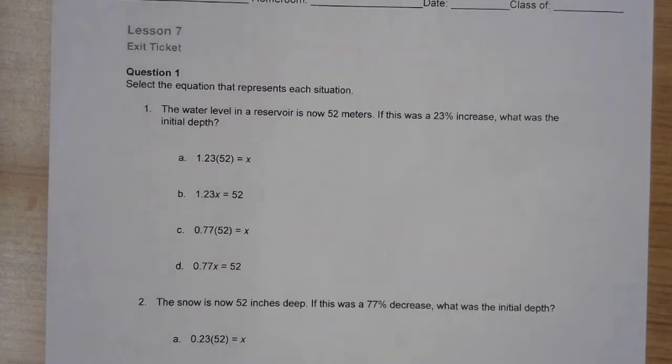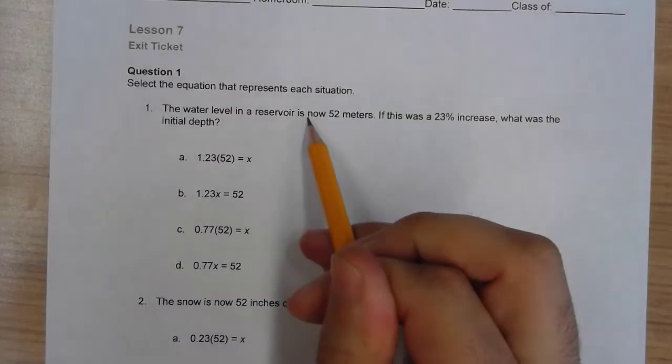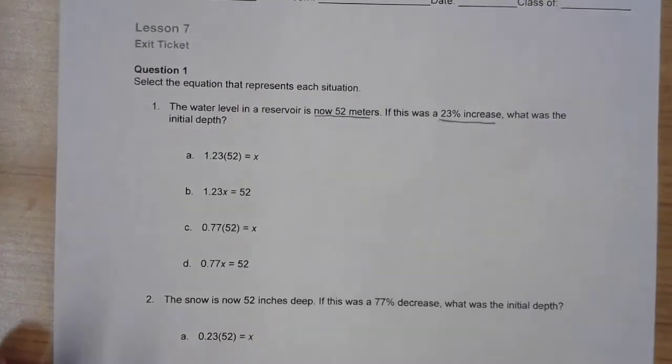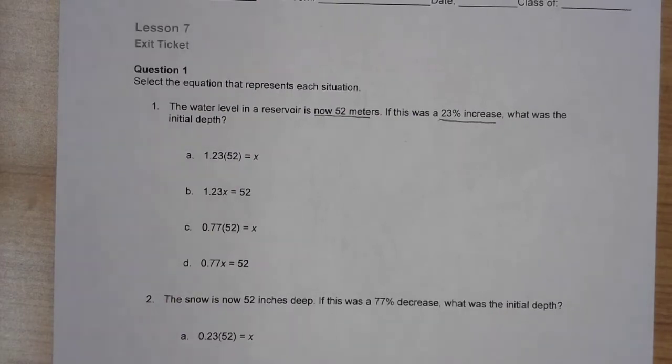We are on lesson 7 exit ticket question number one. Way too many people getting this question wrong, so we're gonna try and clear up some misconceptions. The water level in the reservoir is now 52 meters. If this was a 23% increase from yesterday or last week, whatever the case may be, what was the initial depth?